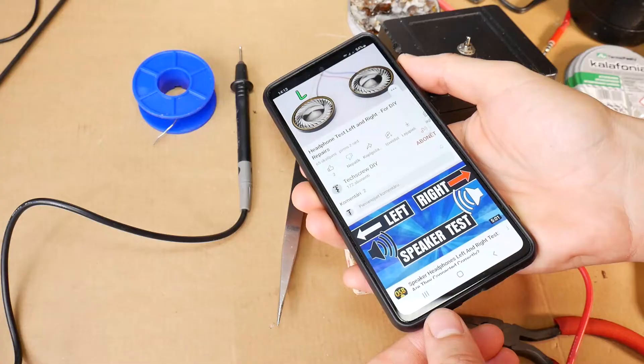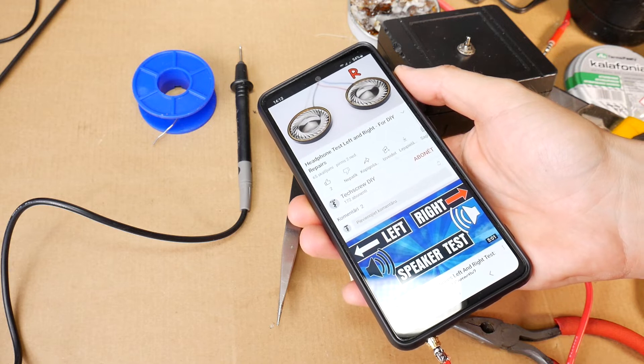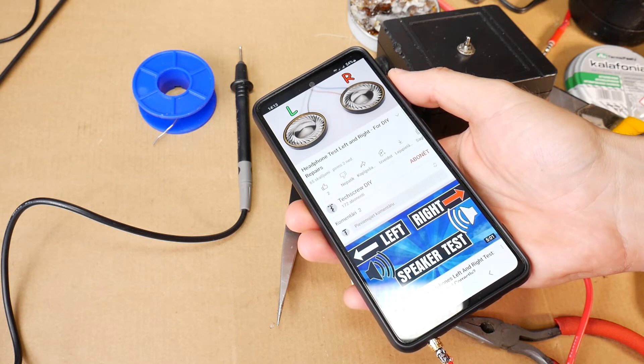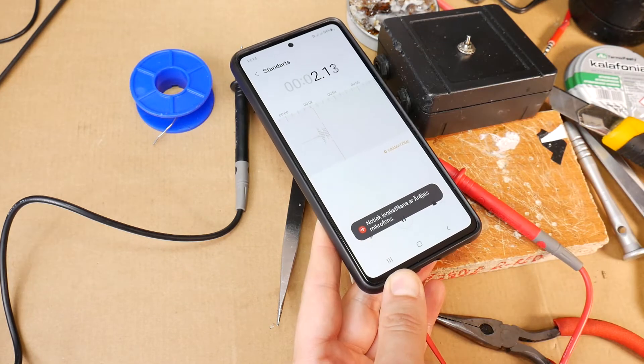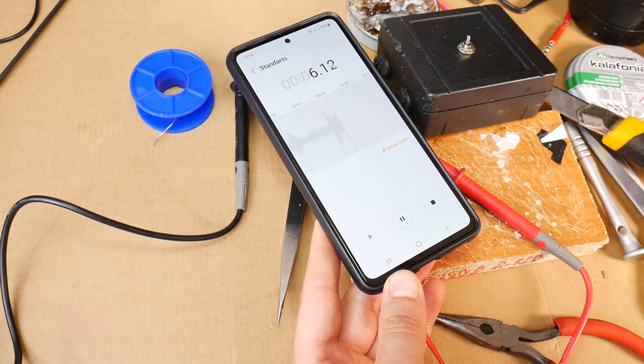Once all wires are soldered, connect the headset to the phone and test the headphones with a video from the Tech Screw D channel. Check that the headphones sound as they should and that the microphone is working. Everything works and sounds like new headphones. Super.